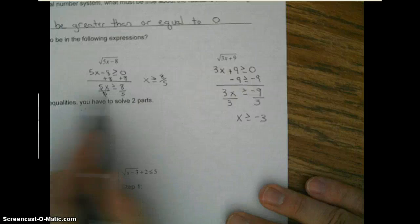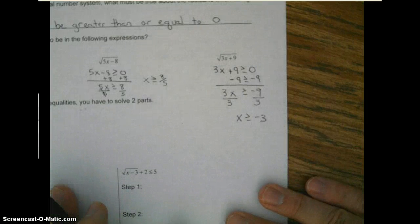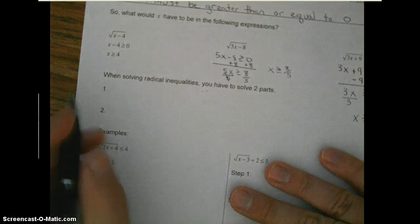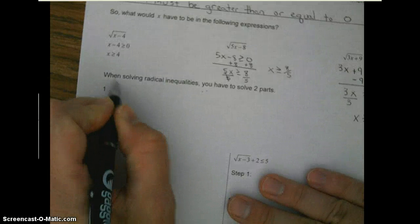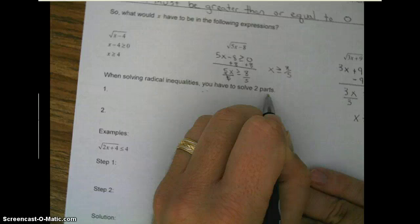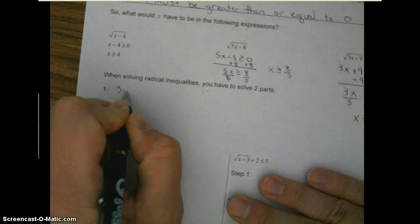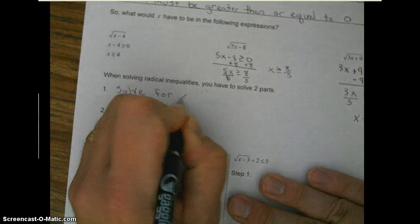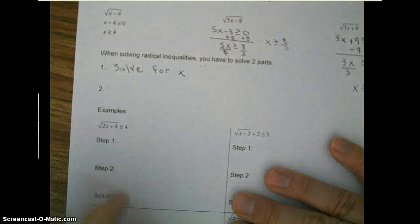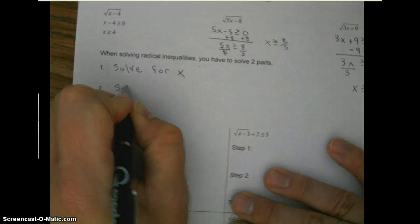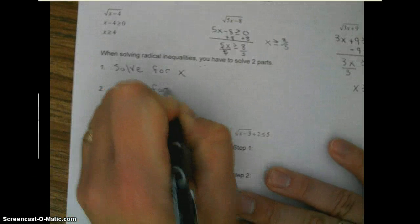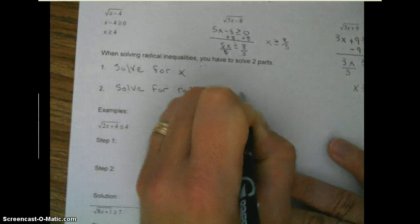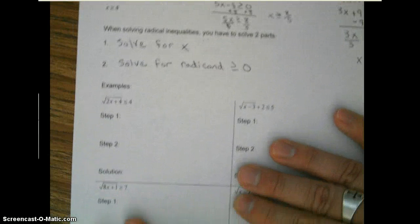So that's the first step. When solving a radical inequality, you must first do this. When solving radical inequalities, you have two solving parts. First step: solve for x. Second step: solve for radicand greater than or equal to zero. So those are the two steps.